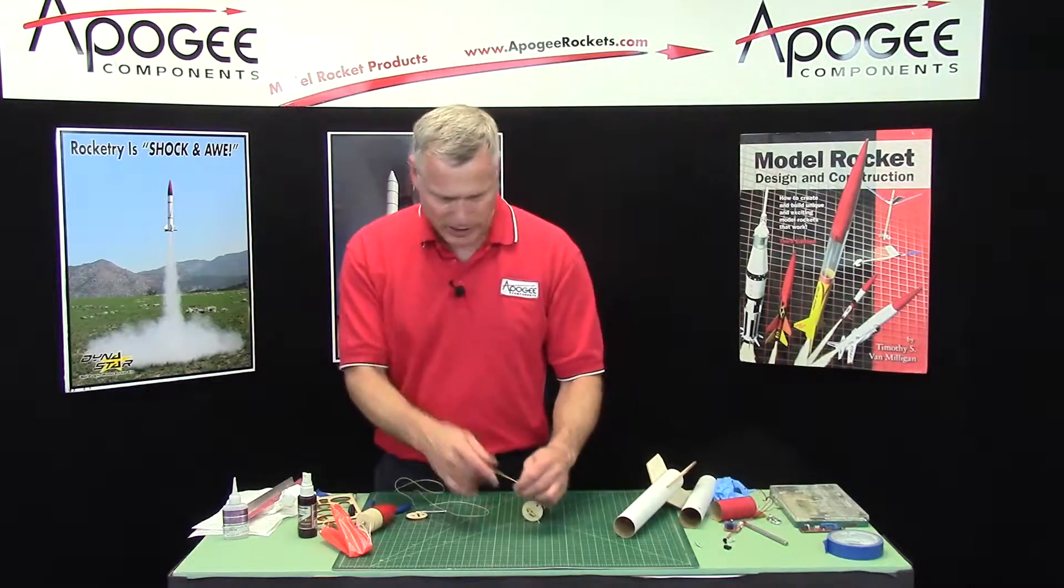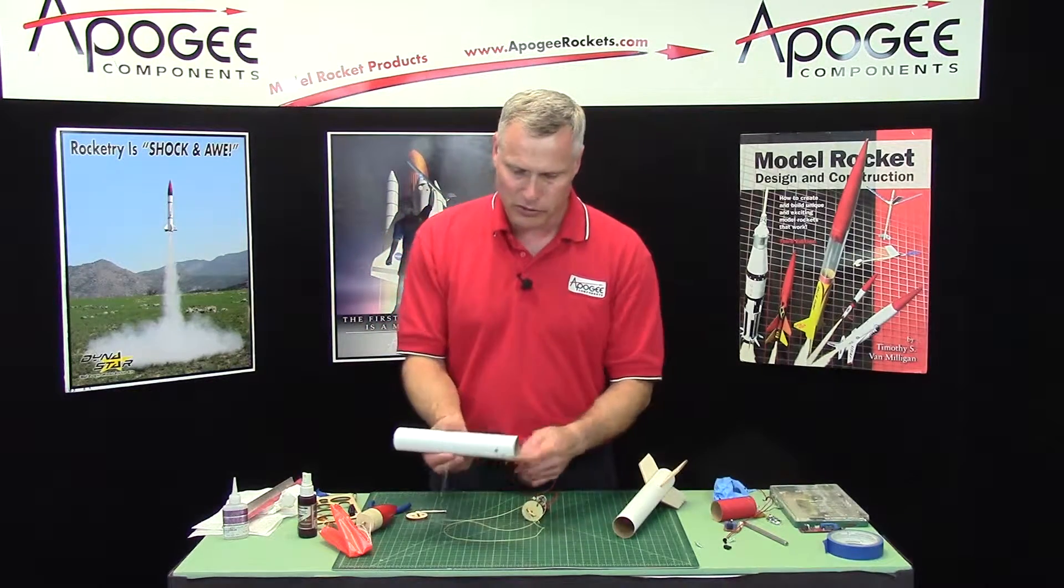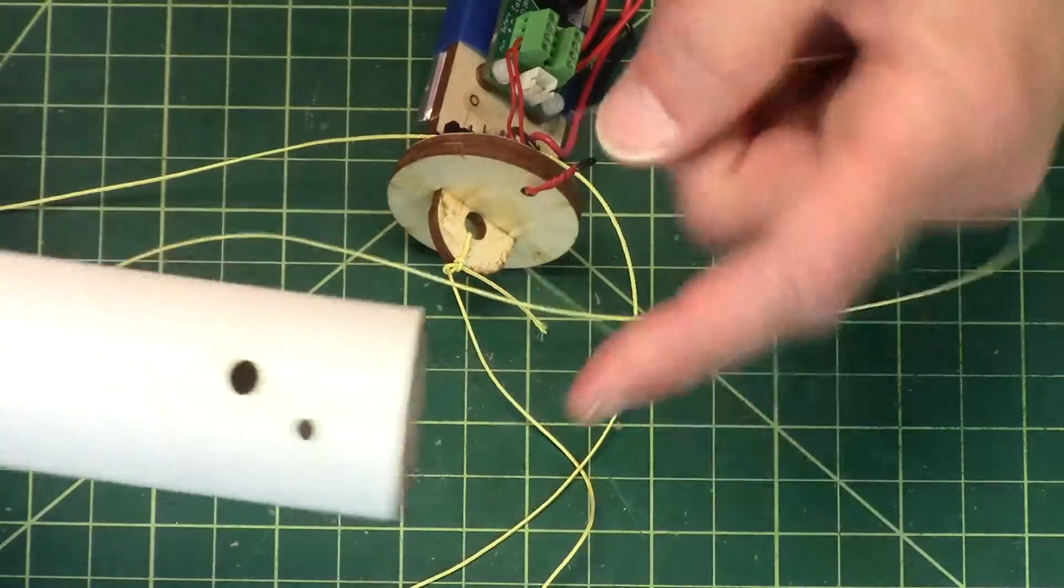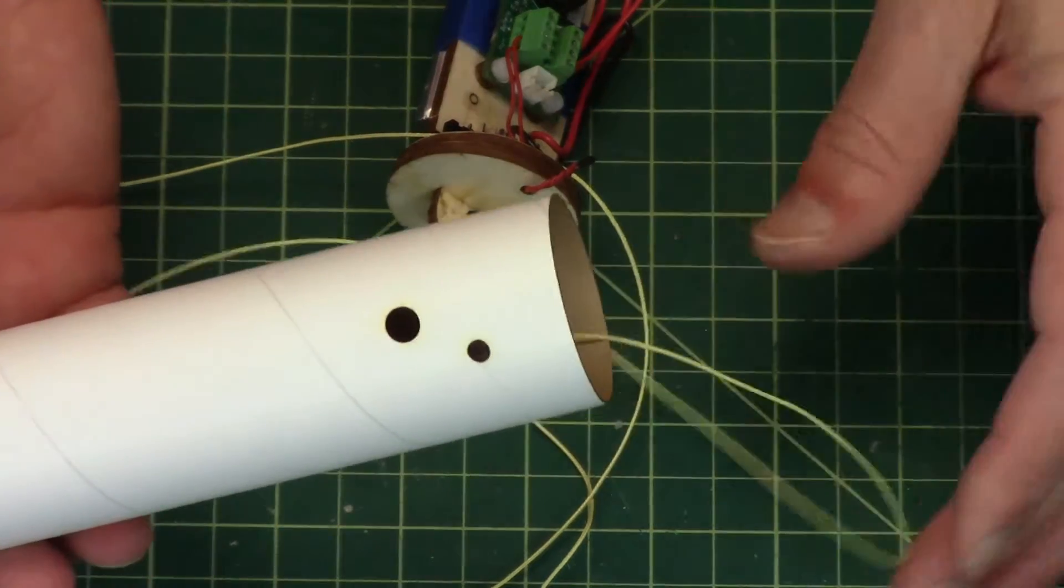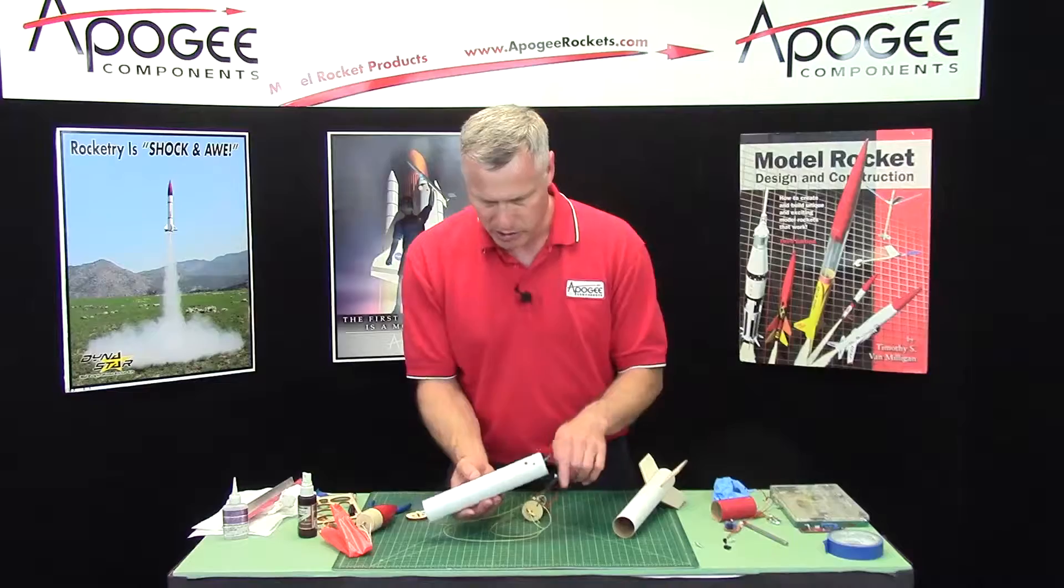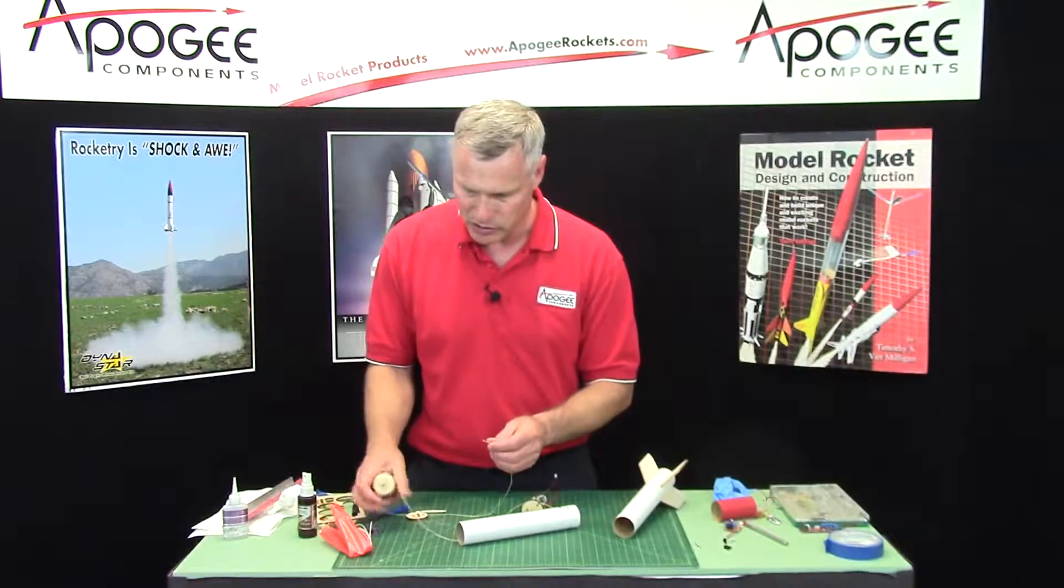So that's attached. Now we're not going to attach it to the nose cone quite yet, it needs to go through the body tube first. You want to slide it through the end of the tube, this is your extra parachute bay body tube, it needs to go through there, come out the front end, now you can attach it to the nose cone.